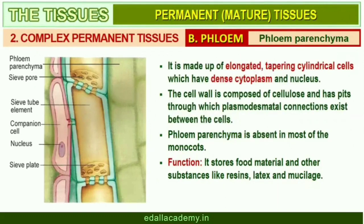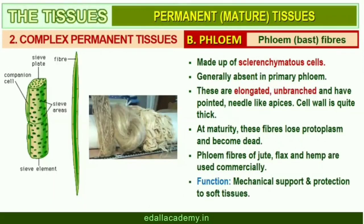Phloem parenchyma is made up of elongated, tapering cylindrical cells which have dense cytoplasm and nucleus. The cell wall is composed of cellulose and has pits through which plasmodesmatal connections exist between cells. Phloem parenchyma stores food material and other substances like resins, latex, and mucilage. Phloem parenchyma is absent in most monocotyledons. Phloem fibers, or bast fibers, are made up of sclerenchymatous cells, generally absent in primary phloem but found in secondary phloem. They are much elongated, unbranched with pointed needle-like apices, and become dead at maturity. Phloem fibers of jute, flax, and hemp are used commercially.